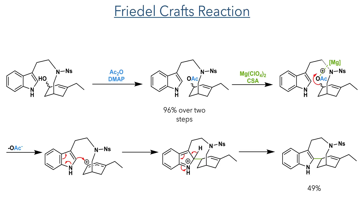Reacting this with magnesium perchlorate and CSA activates the acetate group, allowing it to be eliminated and forming a stabilised allylic cation. This cation could then undergo an intramolecular Friedel-Crafts reaction. The addition of the 2-position of the indole ring to this cation formed an iminium intermediate that rapidly loses a proton to restore aromaticity and form the macrocyclic ring in a 49% yield.